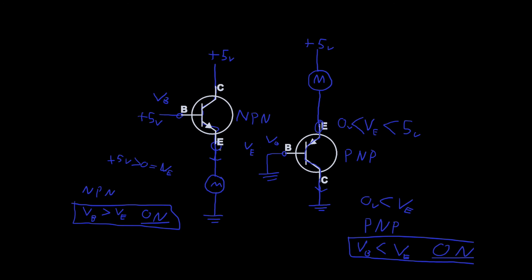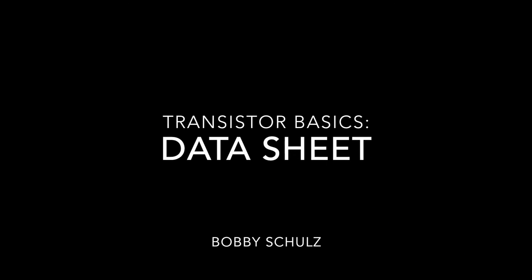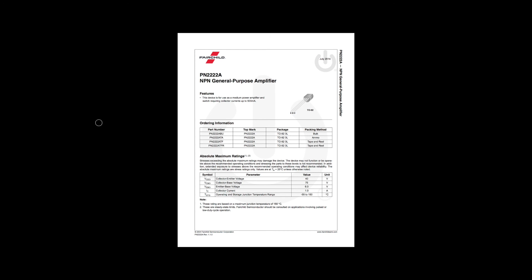Now let's look at how we know this about transistors - we're going to look at a datasheet before we get to application. A datasheet gives us a lot of information about our transistor. To find one, go to Google and type in the numbers and letters on the back of your transistor - that's the part number - and a sheet like this will come up right away.